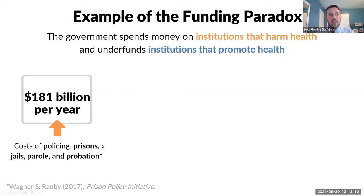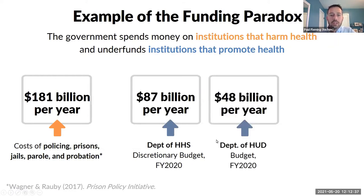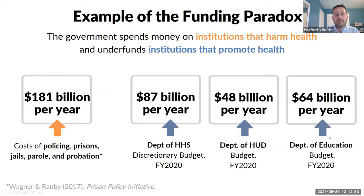To contextualize that figure: the federal Department of Health and Human Services — of which NIH and CDC are a part — has a discretionary budget of $87 billion per year, less than half of what we spend on policing, prisons, and jails. The Department of Housing and Urban Development has a budget of $48 billion per year. The Department of Education federally has a budget of $64 billion per year. So we are spending so much money on these systems while often underfunding other systems that we know promote health.